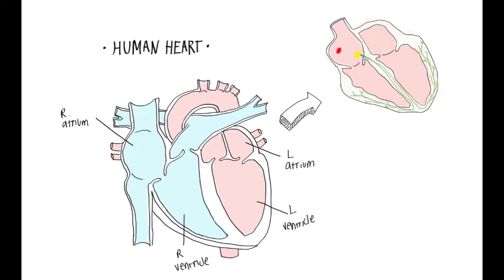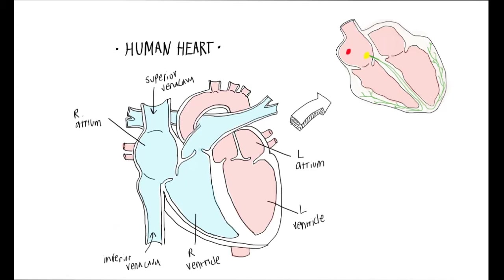Now let's take a look at blood flow. The right side of the heart, depicted here in blue, is receiving deoxygenated blood from the superior vena cava as well as the inferior vena cava. Once that blood reaches the right atrium, it is emptied into the right ventricle, but it must first pass through the right atrioventricular valve, also known as the tricuspid valve.